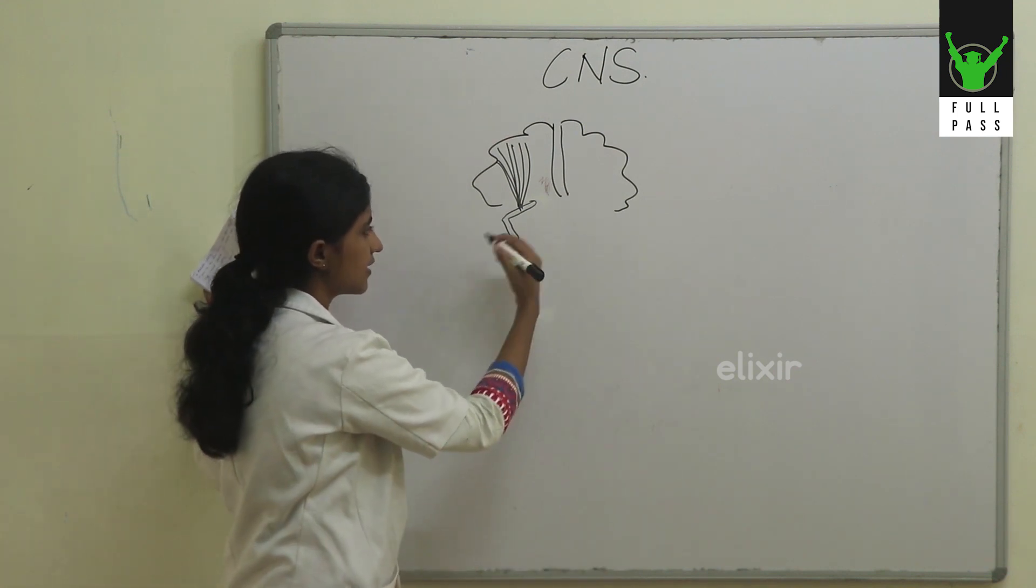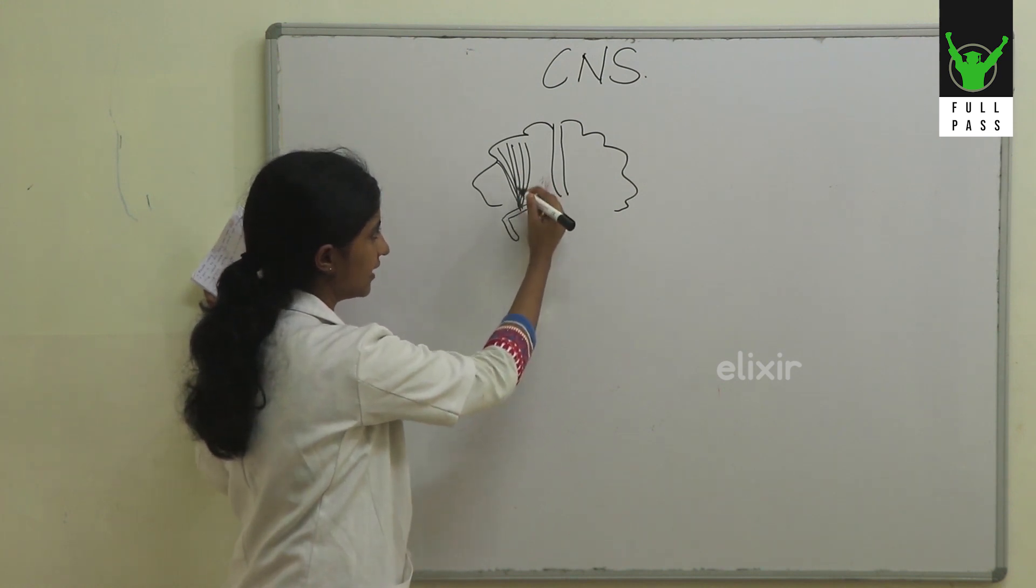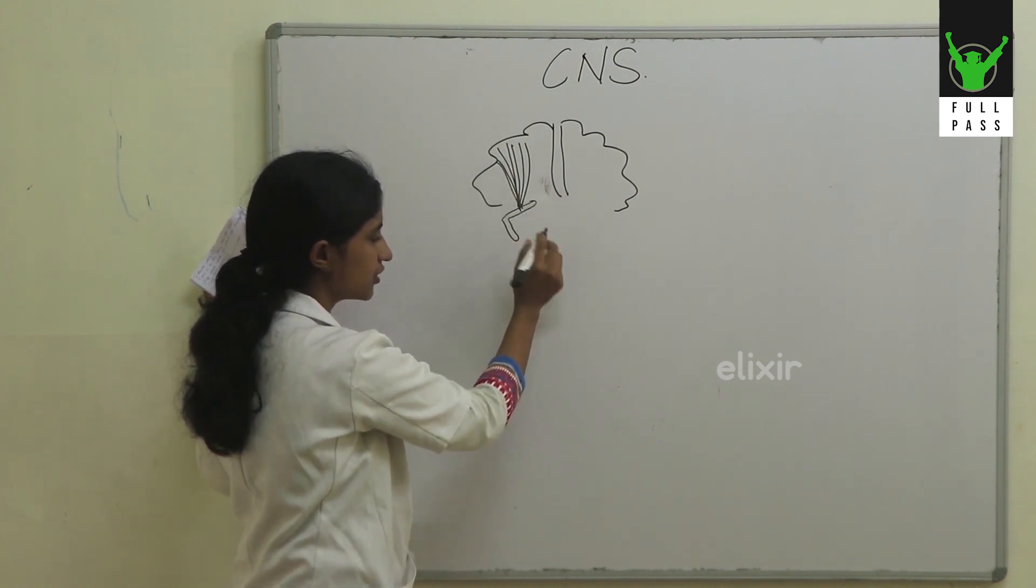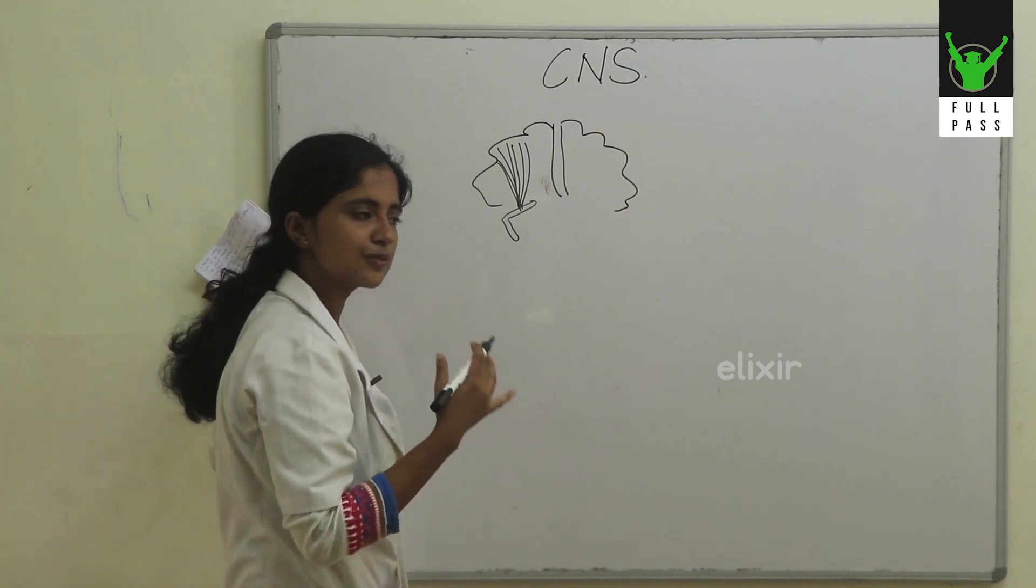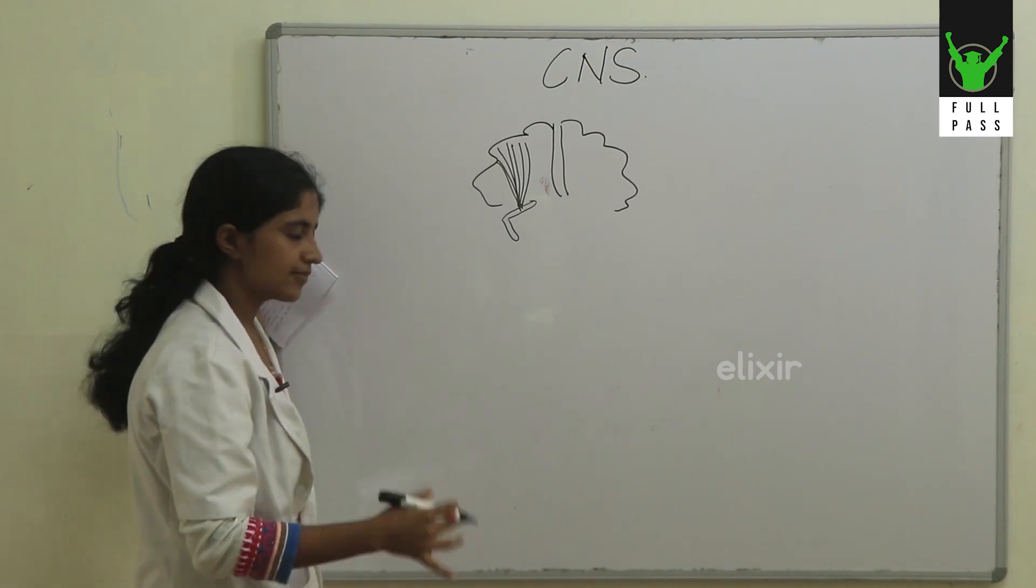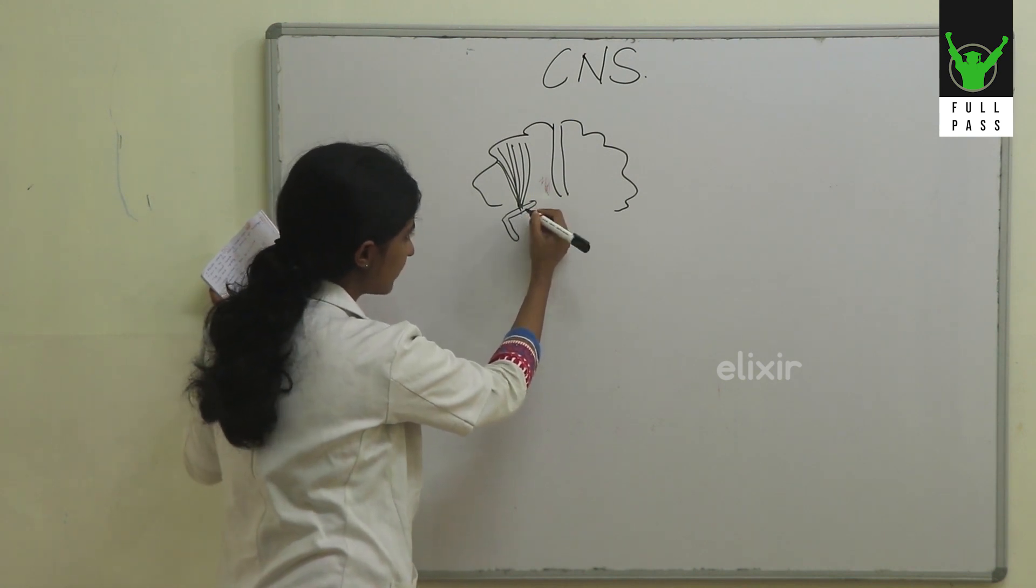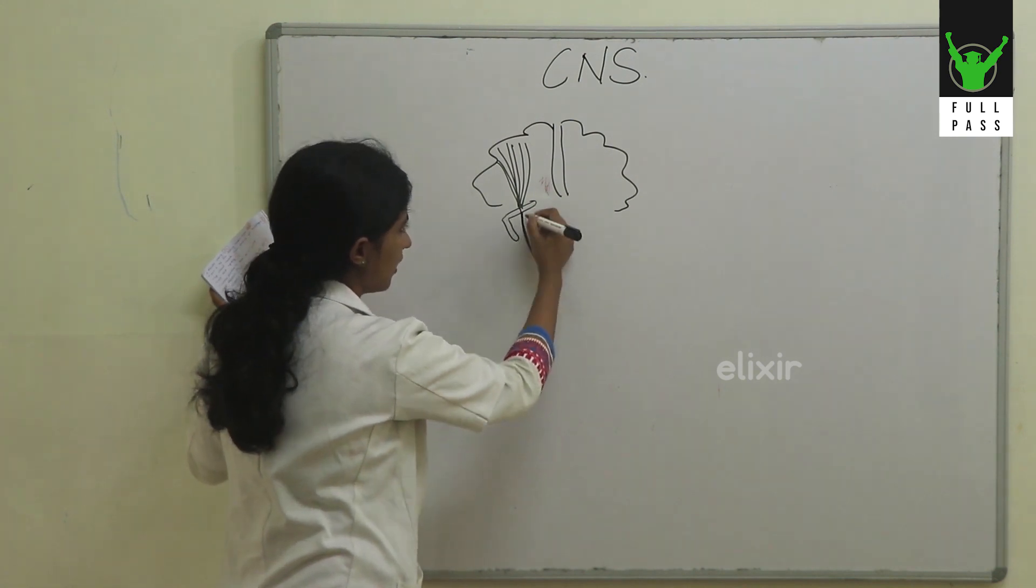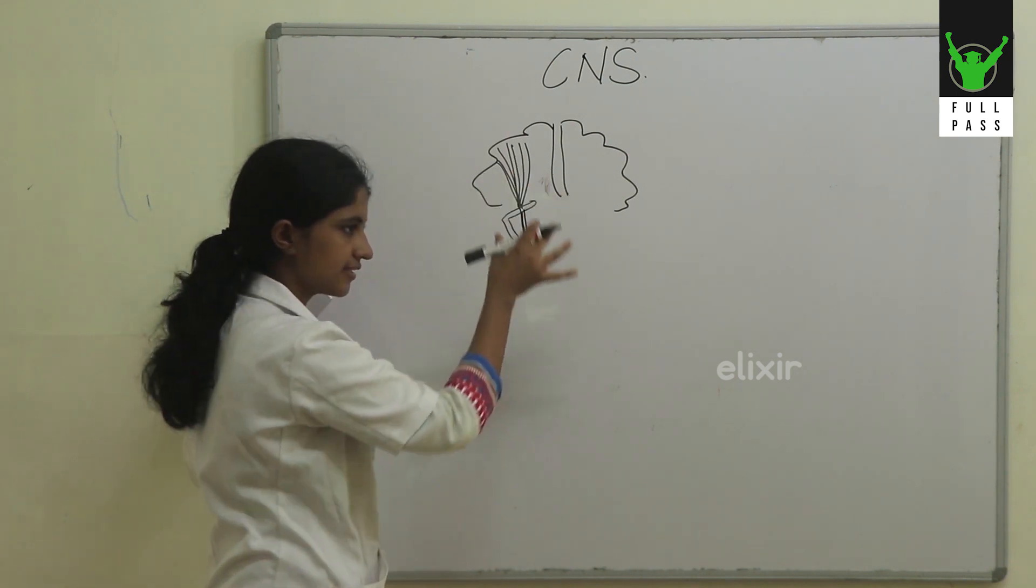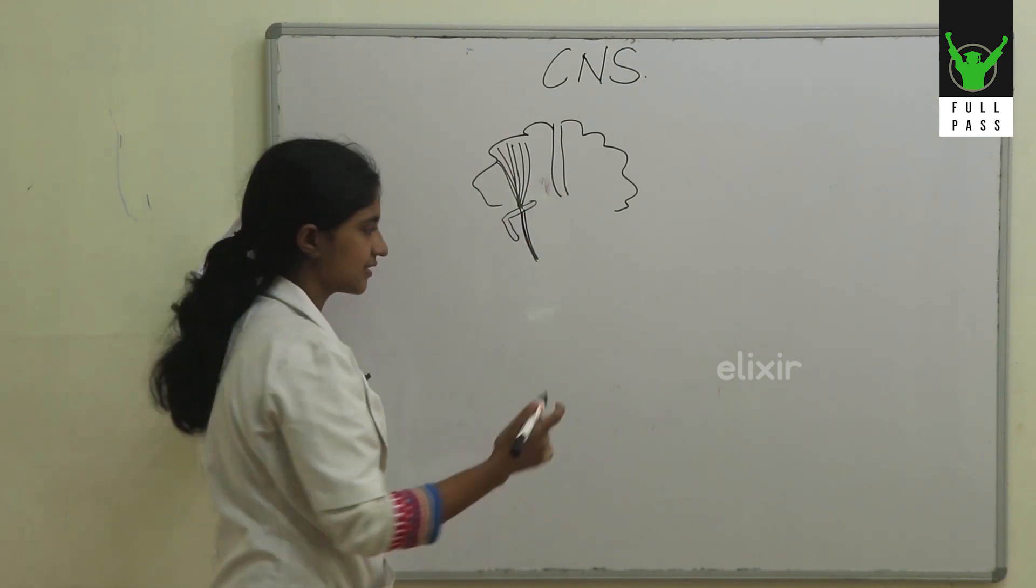The internal capsule has an anterior limb, a genu, and a posterior limb. Mainly these corticospinal tract fibers pass through the posterior limb of the internal capsule, and then they descend down from the cortex and reach the brainstem.